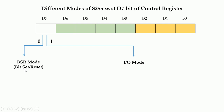The BSR mode is used for individually setting Port C bits as 1 or 0. For example, if you have five LEDs attached to five pins of Port C, you can use BSR mode to sequentially turn them on or off. Now moving to I/O mode: when D7 is 1, IC8255 goes into I/O mode, which is of three types — Mode 0, Mode 1, and Mode 2.